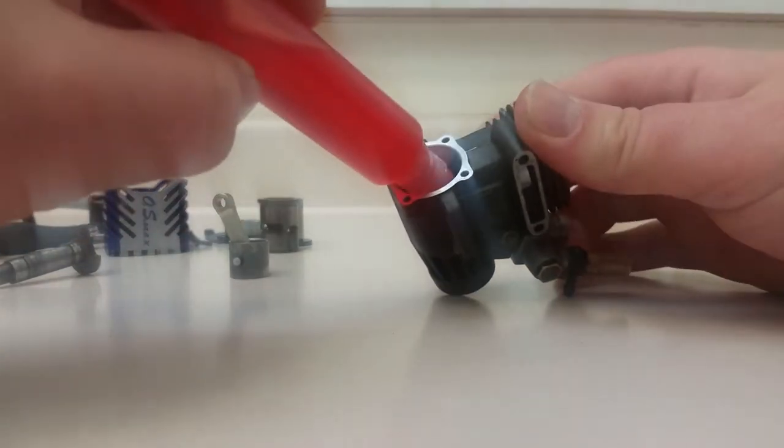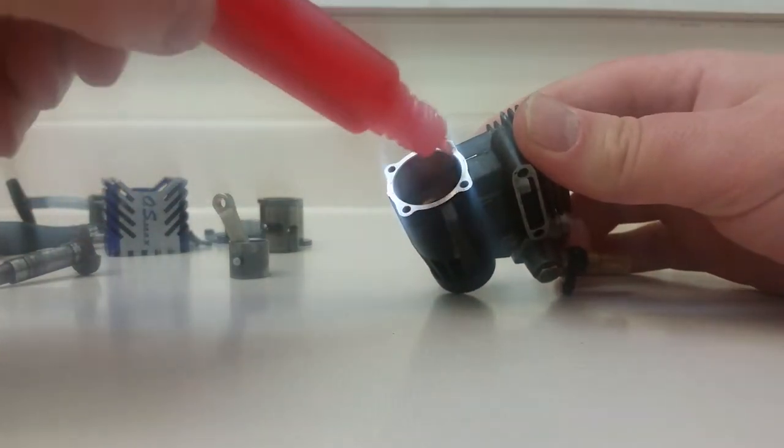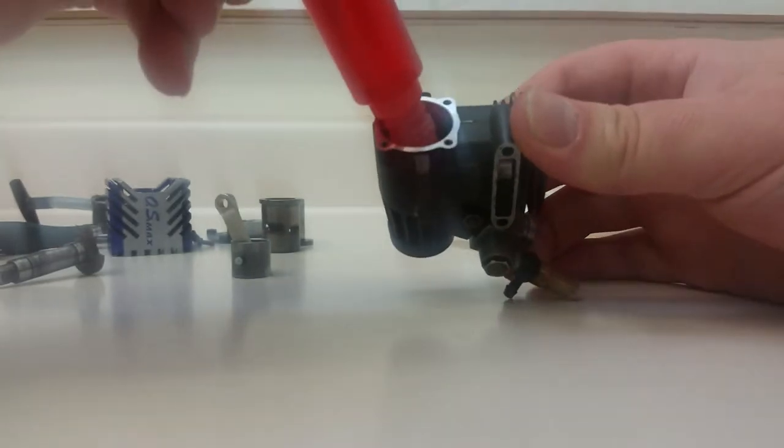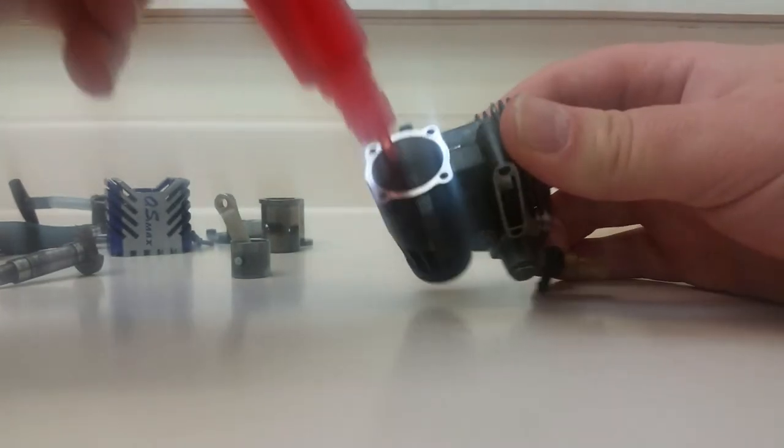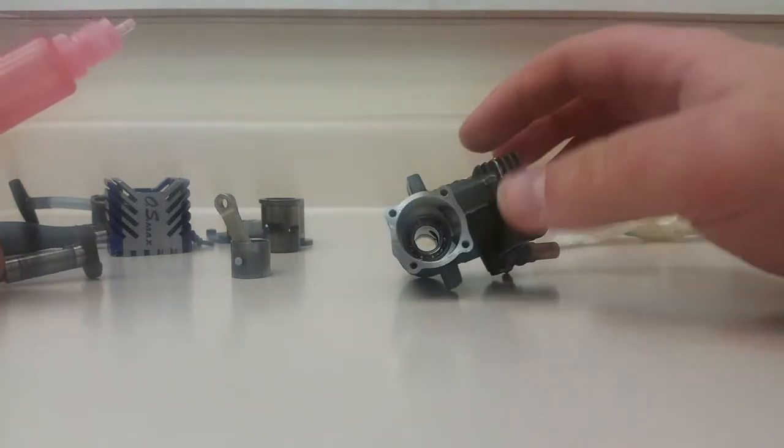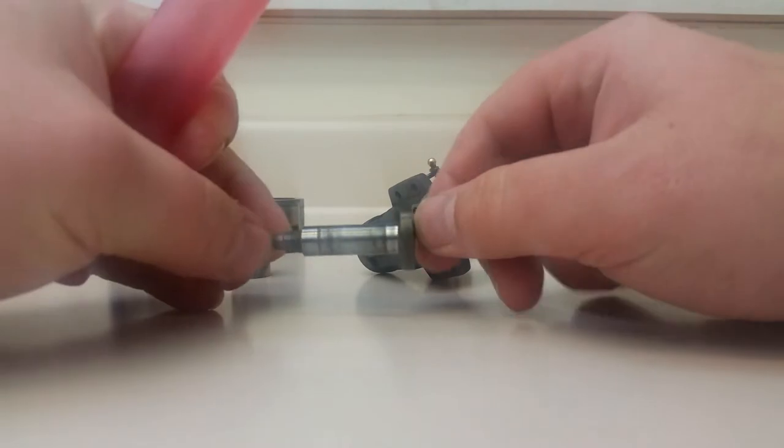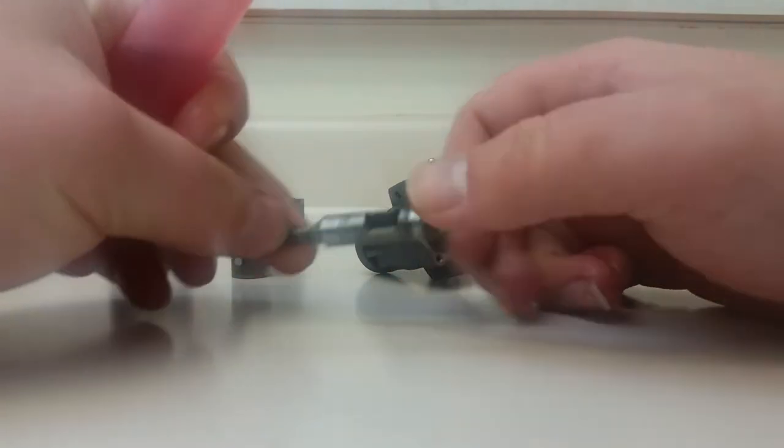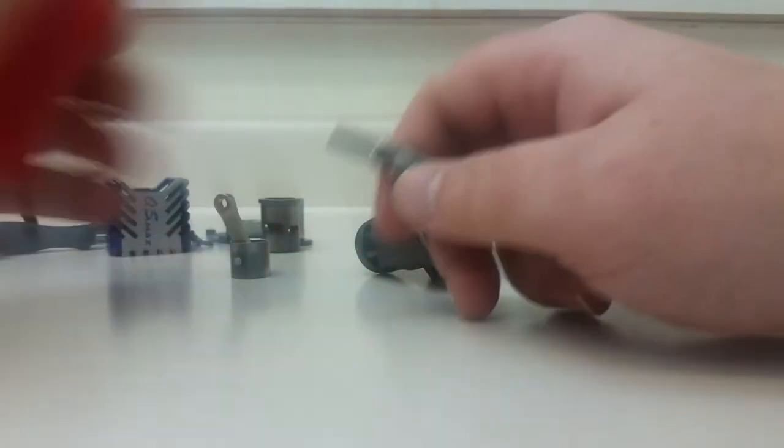So we're gonna start the reassembly process and how I like to do that is take your oil, put a dot or two. You don't need to go crazy, you don't want to flood the engine out with oil, but you want to put a couple of drops in the rear bearing so it's gonna see the most stress.